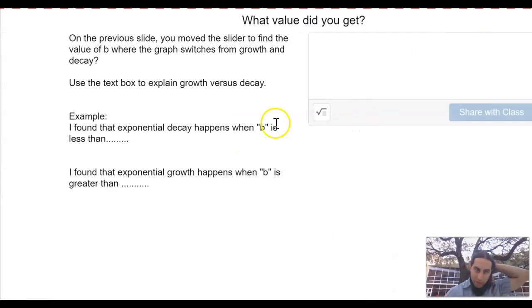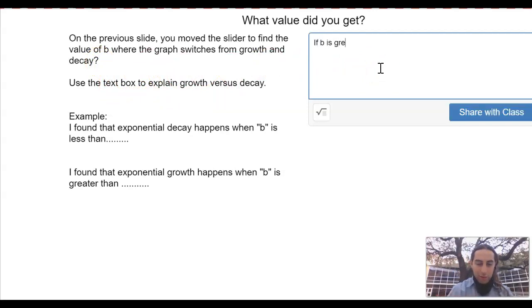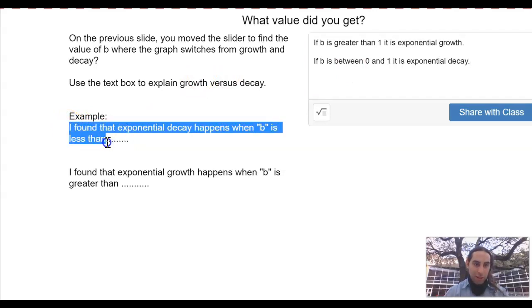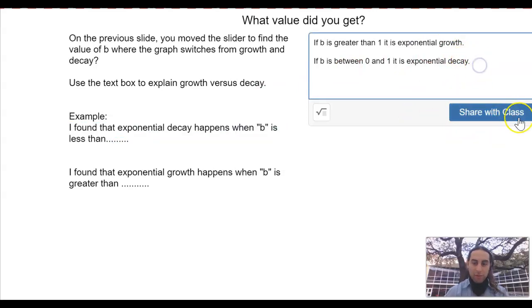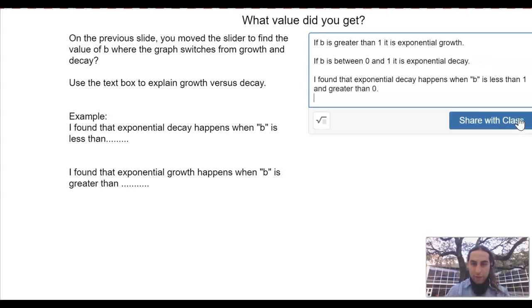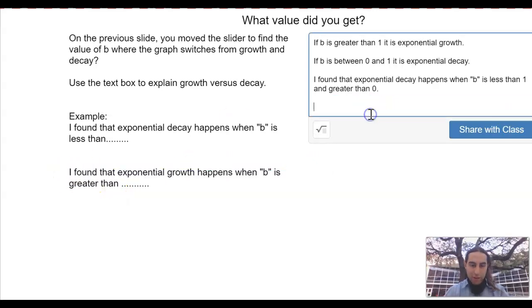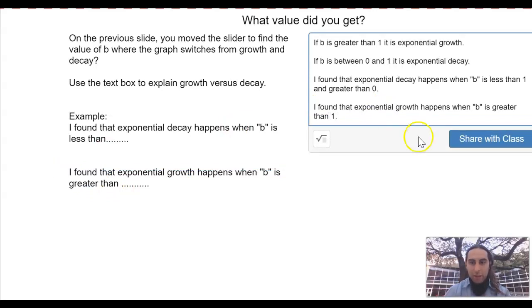Let's go to the next one here. So on the previous slide, you move the slider to find the value of b where the graph switches from growth and decay. That's not a question. That's a statement. Use the text box to explain growth versus decay. If b is greater than one, it is exponential growth. But if b is between zero and one, it is exponential decay. Now you could write it using these stems. I found that exponential decay happens when b is less than one and greater than zero. And I could use this sentence stem to help us out. I found that growth when b is greater than one. So there you go. Share the class. Everything's great.